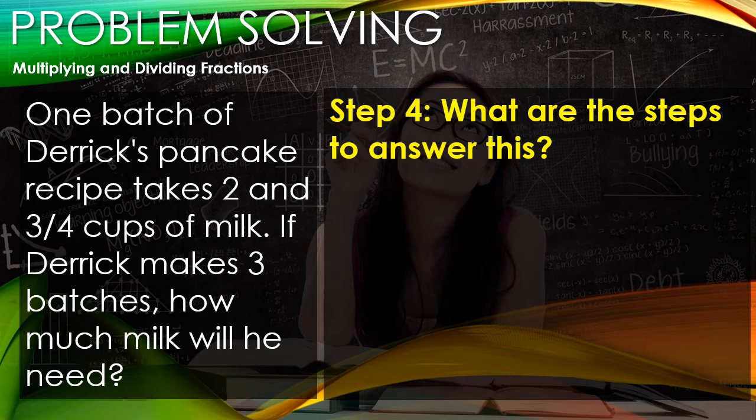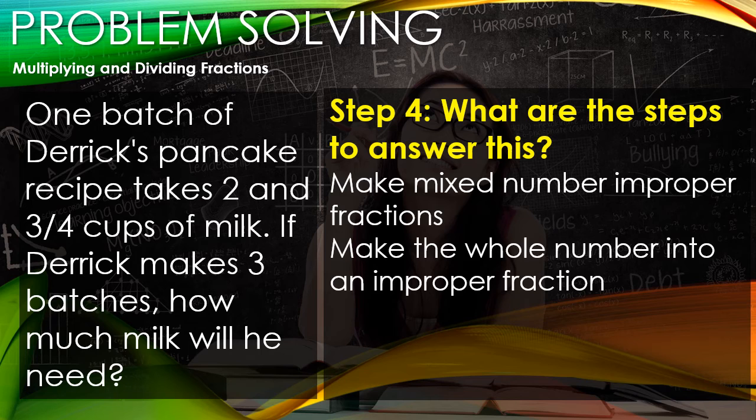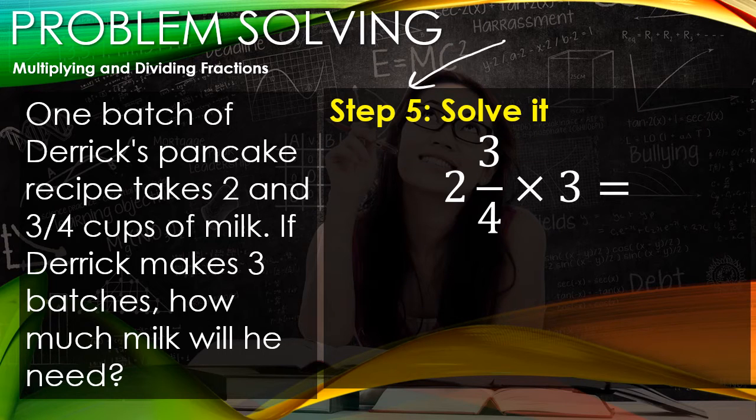We make the whole number into an improper fraction, multiply the numerators, multiply the denominators, and then simplify. So we have what we wrote out: 2 and 3/4 times 3. Our first step is to make these numbers into improper fractions. 4 times 2 is 8, plus 3 is 11.